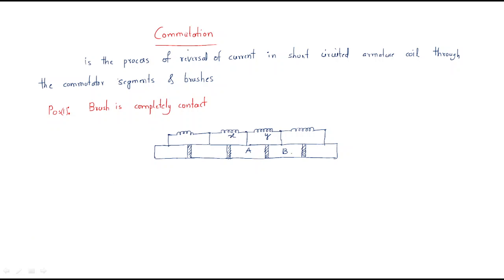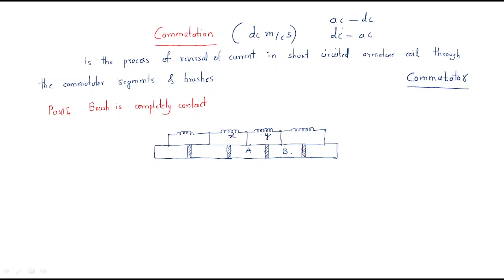Hello everyone. In this session we will discuss the next topic: commutation. Commutation is very important in DC machines. Commutation is only available in DC machines; all remaining machines are AC machines. In DC machines, wherever AC to DC conversion or DC to AC conversion is required, we need the commutation process. To maintain this commutation, we use a device called the commutator.